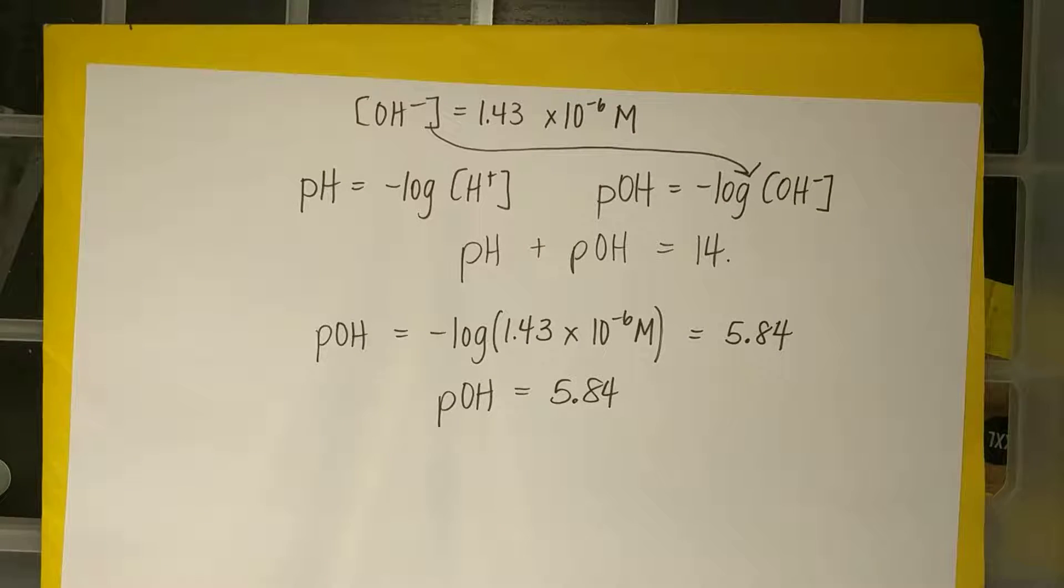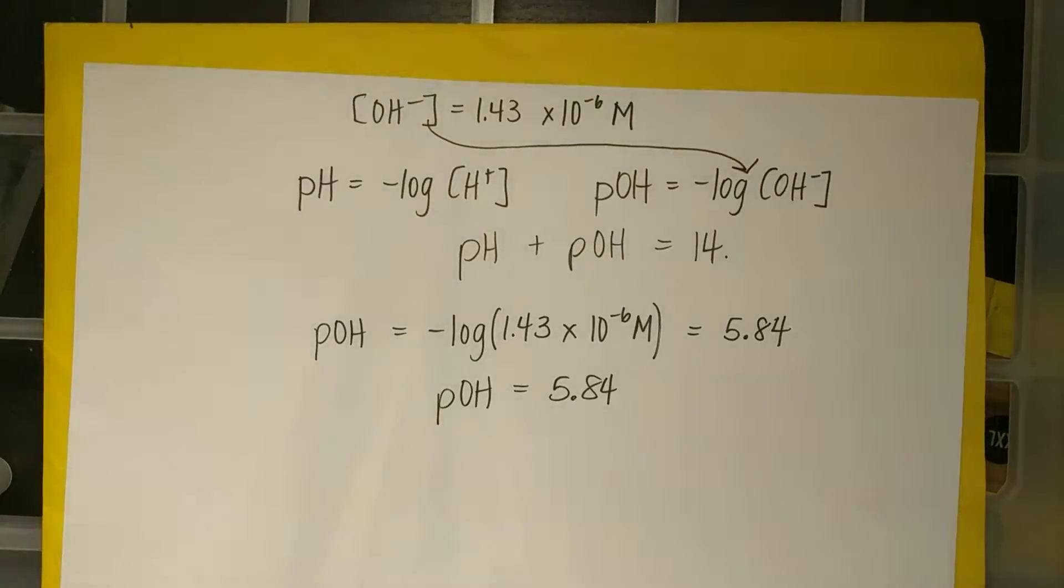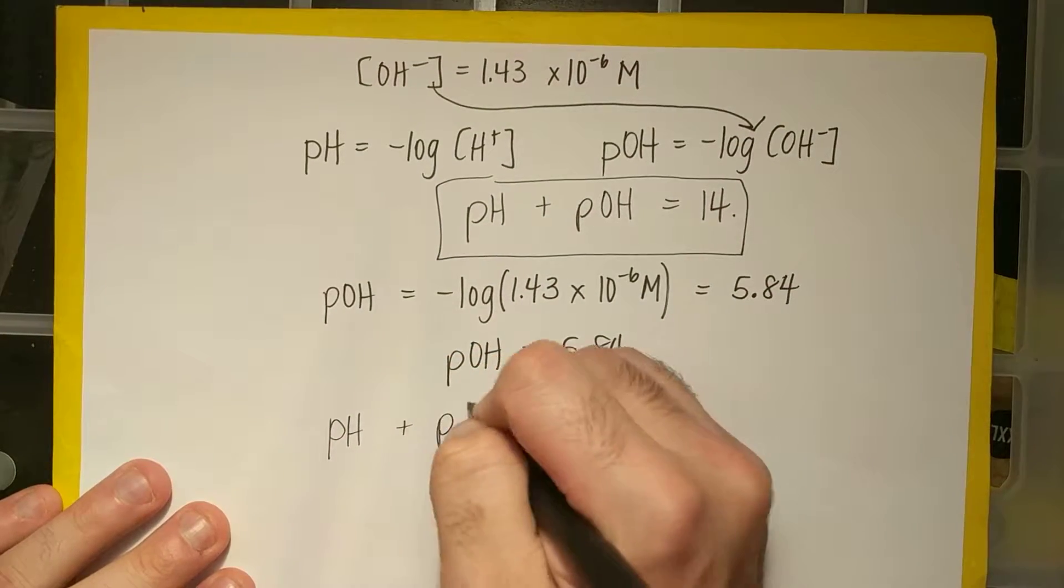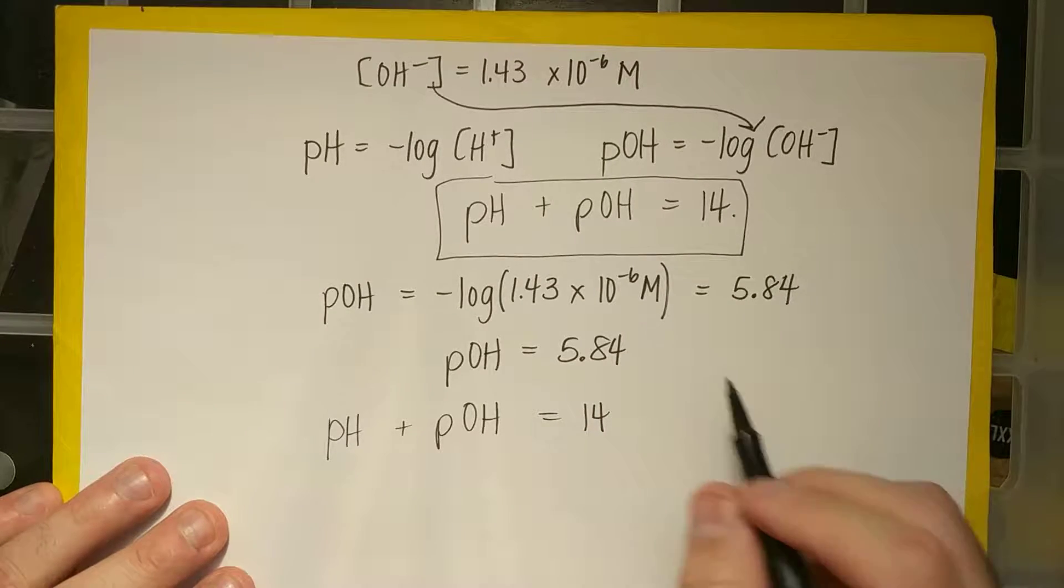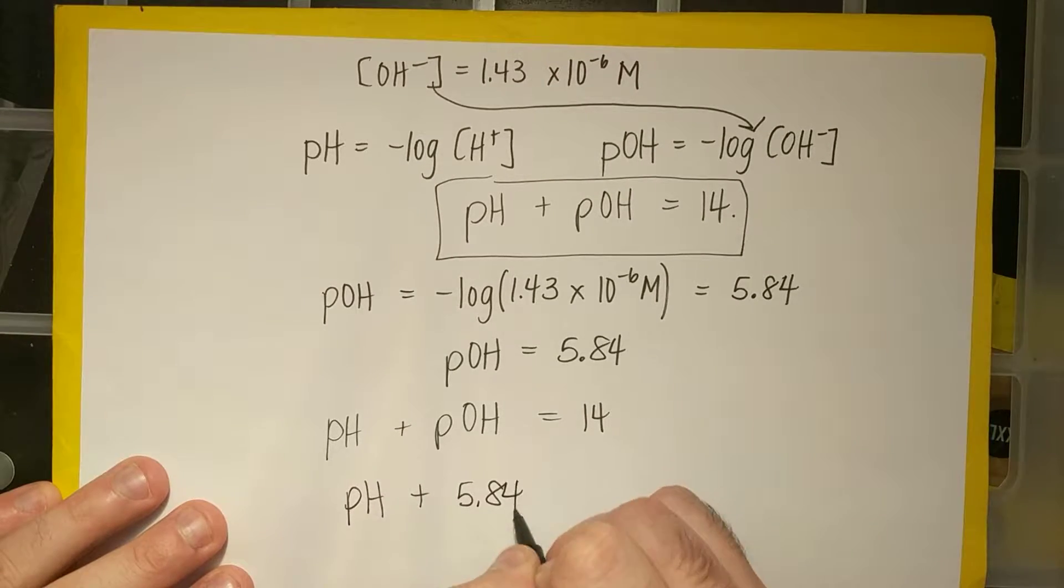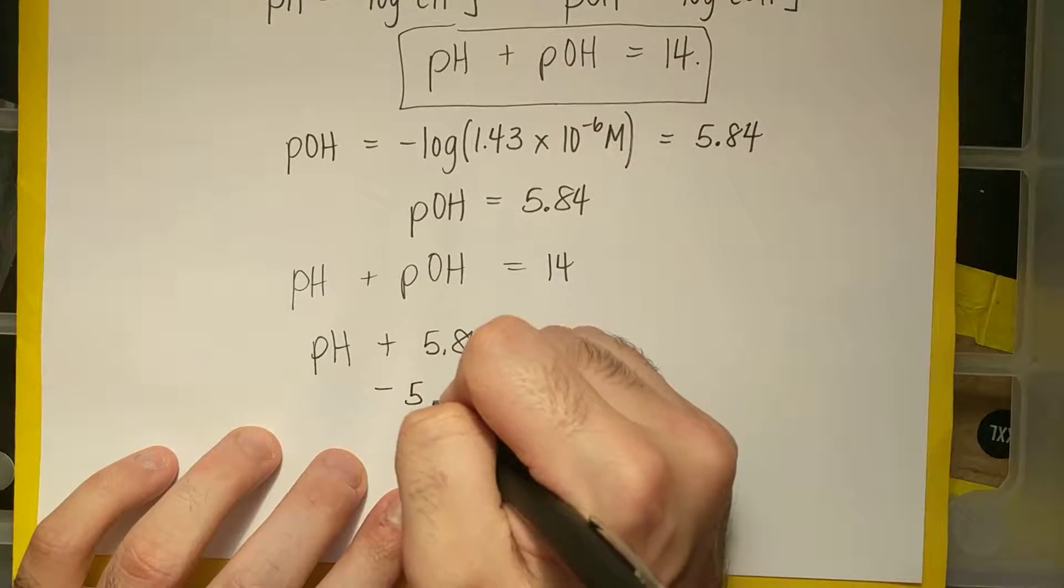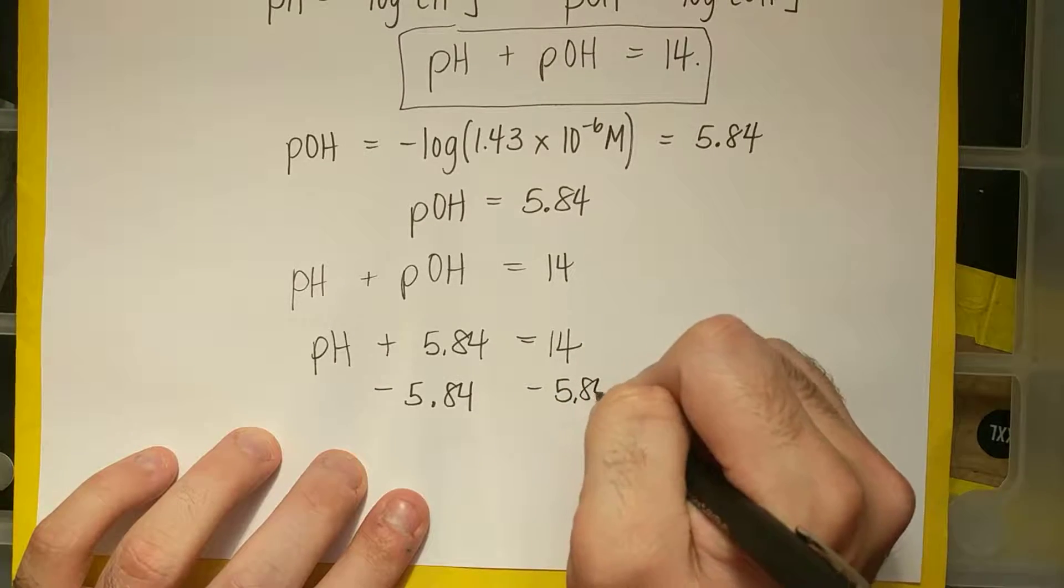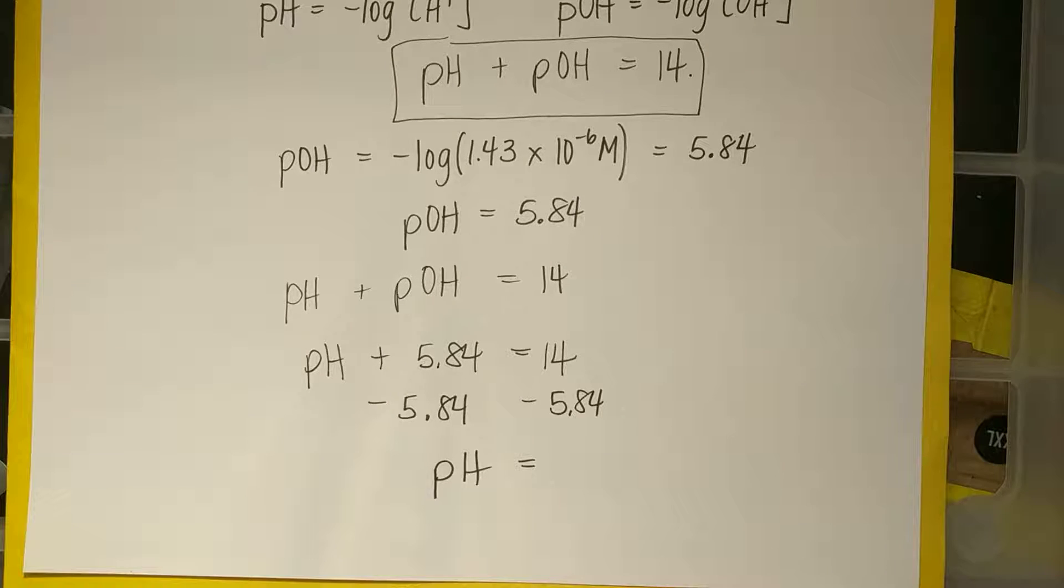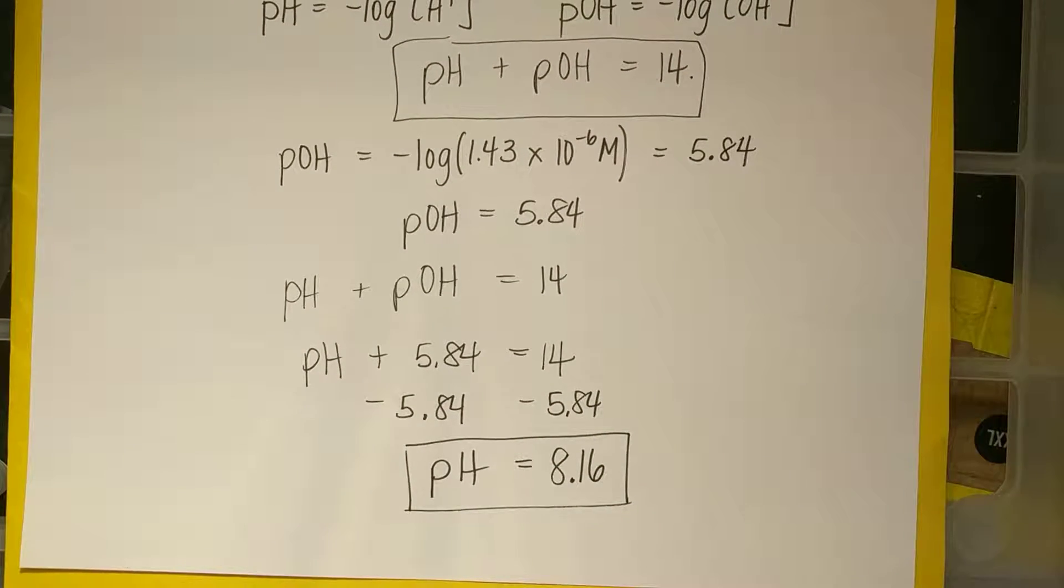However, that is not what the question is asking. The question is asking for pH. So I'm going to need this gorgeous equation. pH plus POH equals 14. Well, I know my POH is 5.84. So pH plus 5.84 equals 14. How can I solve for pH here? Subtract 5.84 from both sides. pH equals 14 minus 5.84. I get 8.16. That is my pH.